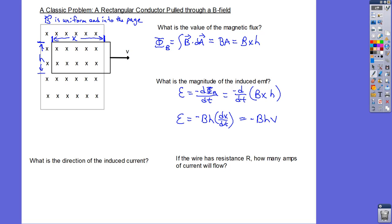It kind of makes sense: to increase the EMF we can make B stronger, make H bigger (changing the effective area of the loop inside the field), or move the loop faster. If you move it faster, we get a larger current — that means a larger induced EMF.